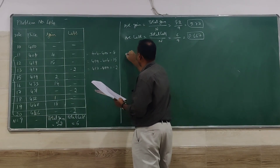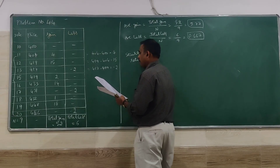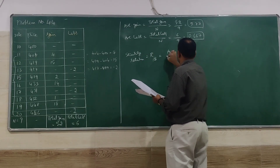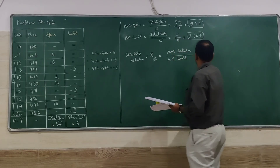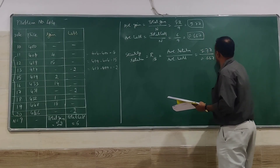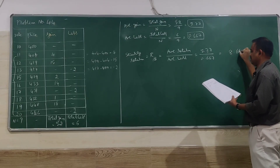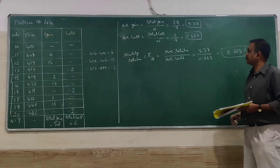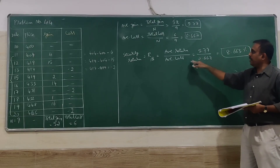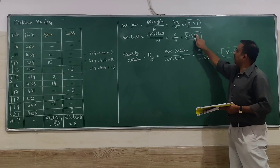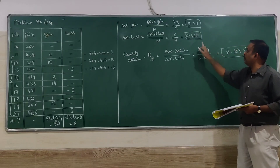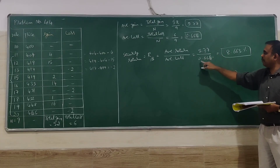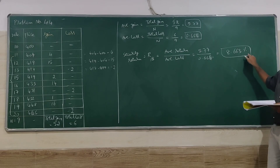Next we calculate the Relative Strength (RS). The formula is: RS equals average gain divided by average loss. So RS equals 5.77 divided by 0.666, which gives approximately 8.663. This is the security return — it tells us the average percentage of return relative to average loss for this particular share each day.